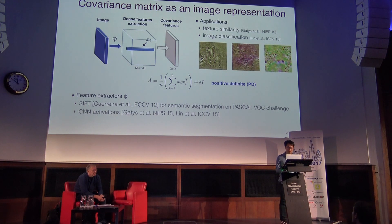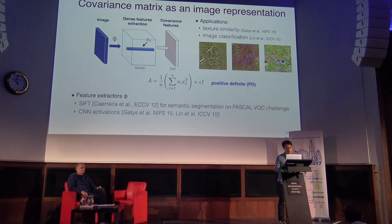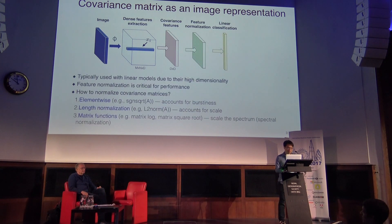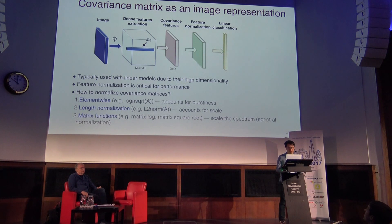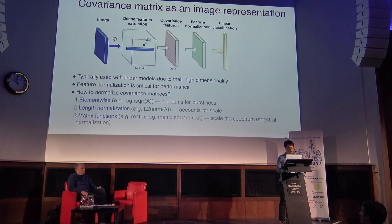For example, Gatys et al. measured actual similarity between the output and the source texture under this representation for texture synthesis. Another application is to use this representation for image classification. Because this covariance representation is usually high-dimensional, people typically use a linear classifier to separate different categories. Because the classifier is simple, feature normalizations are important to ensure good performance. We consider three kinds of normalizations.